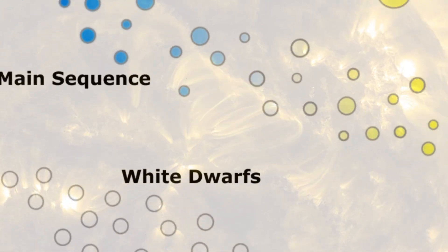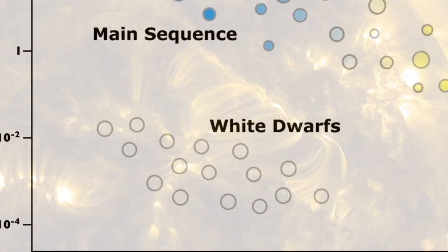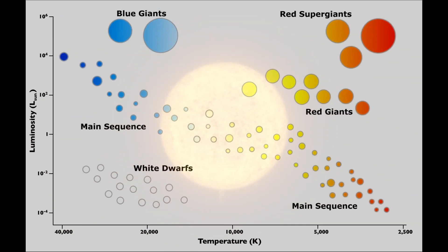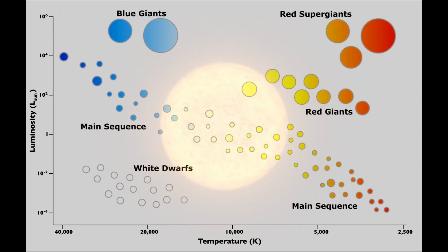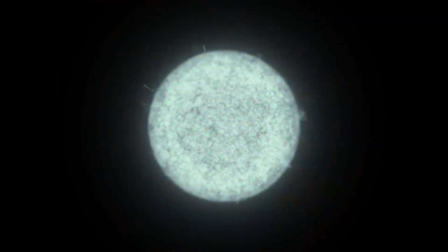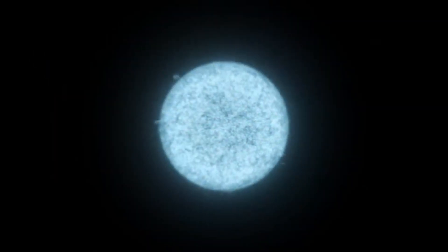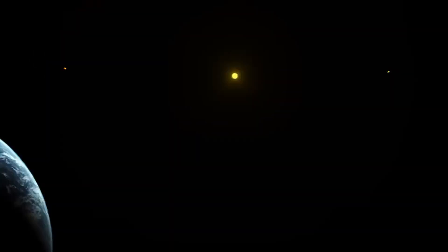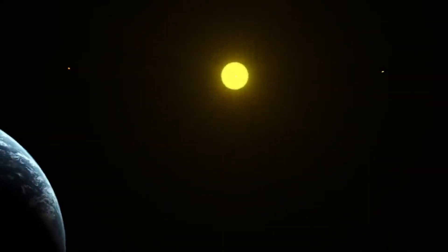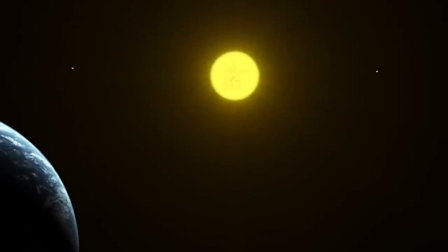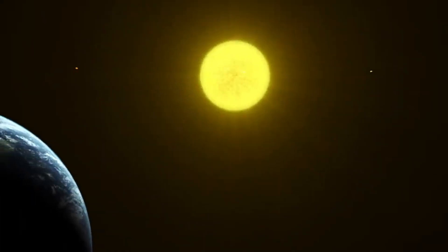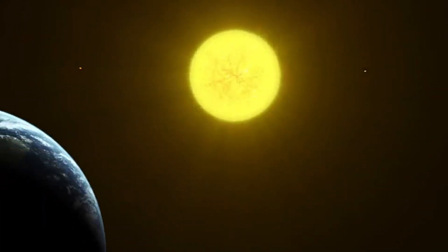At the upper part of the diagram are the brightest and hottest stars, and at the bottom right are the dimmest and therefore the longest-living stars. Main sequence stars are in the most stable phase of their existence — or as it is commonly said, in the phase of life. According to the theory of stellar evolution, when the hydrogen supplies in the core of a star are exhausted, it leaves the main sequence.